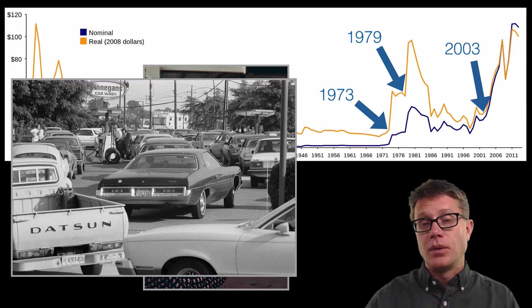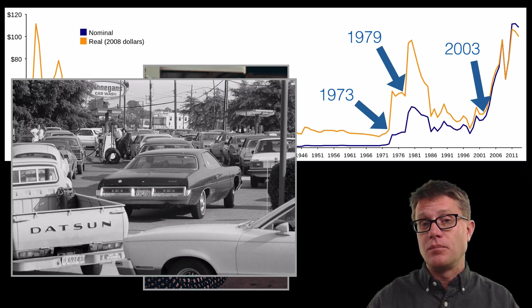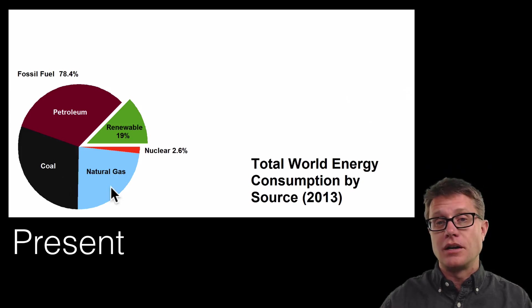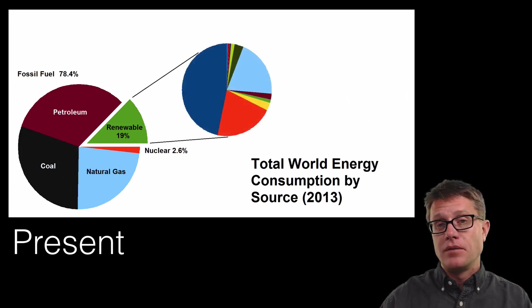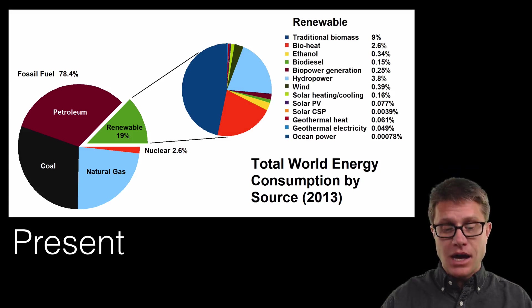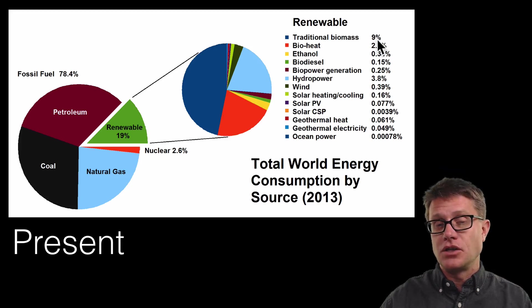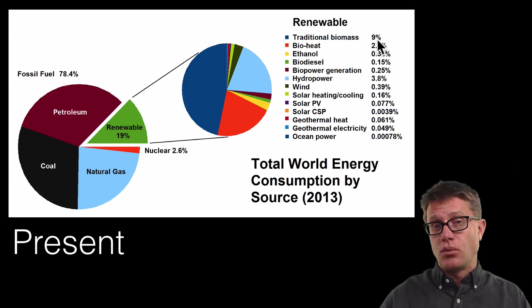Now oil prices are dropping off, but over time, since oil is a non-renewable resource, we are going to have decreases in the amount we can find and increases in price. If we look at where our energy is coming from today, it is oil, coal, and natural gas — that is where most of our energy is coming from in the world. Renewable sources are a growing segment, but there is still traditional biomass, such as wood, making up about 9% of the energy we get. Over time we have to move away from non-renewable and towards renewable sources of energy.